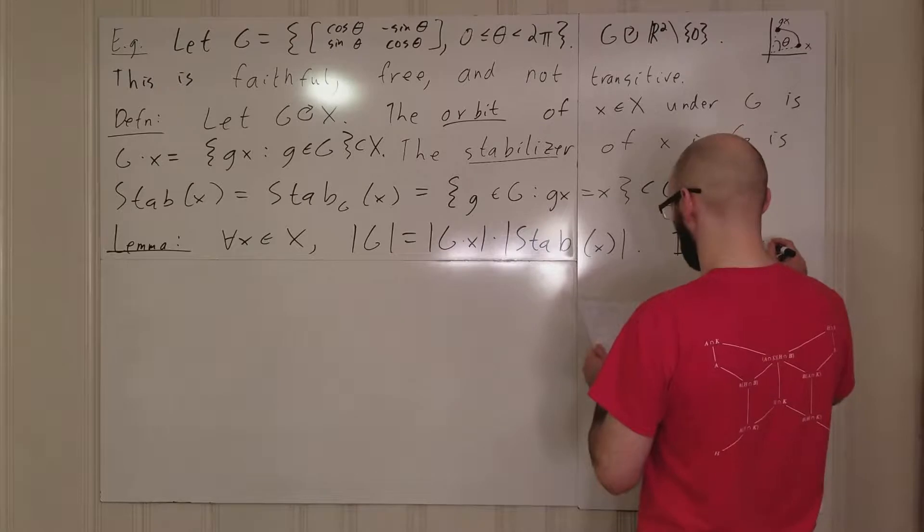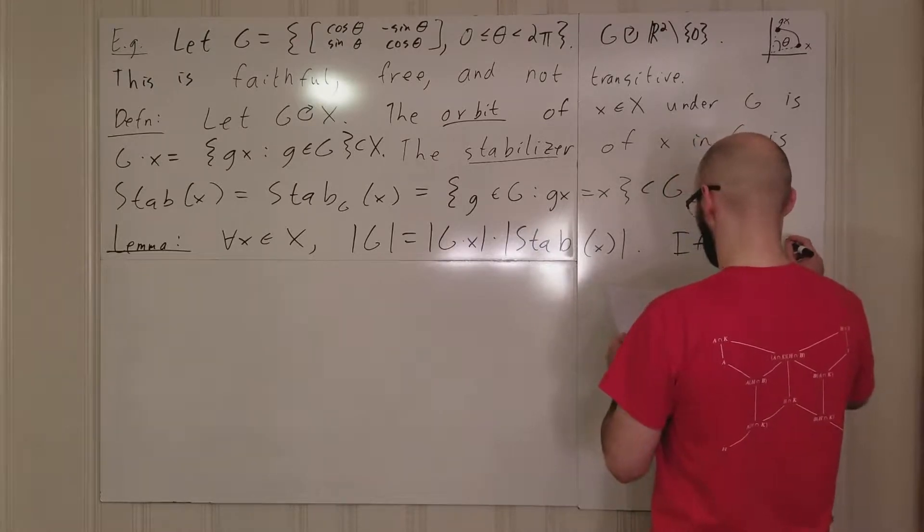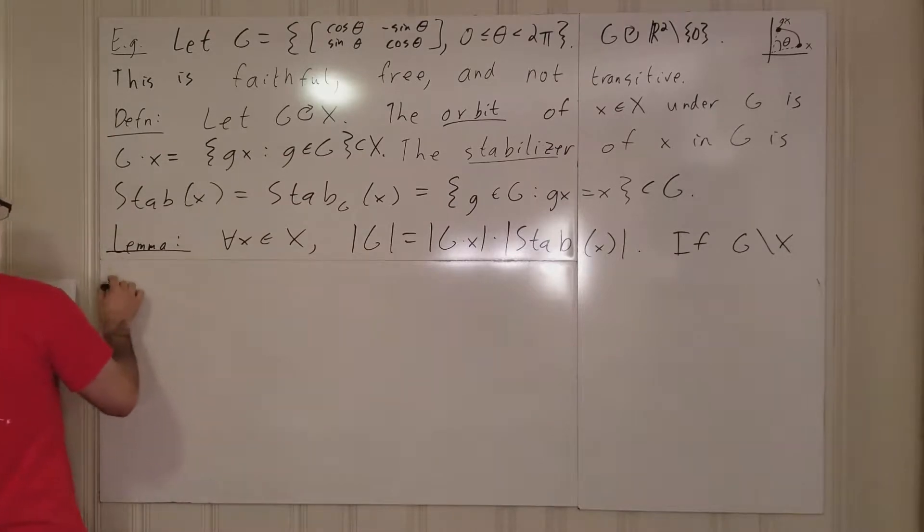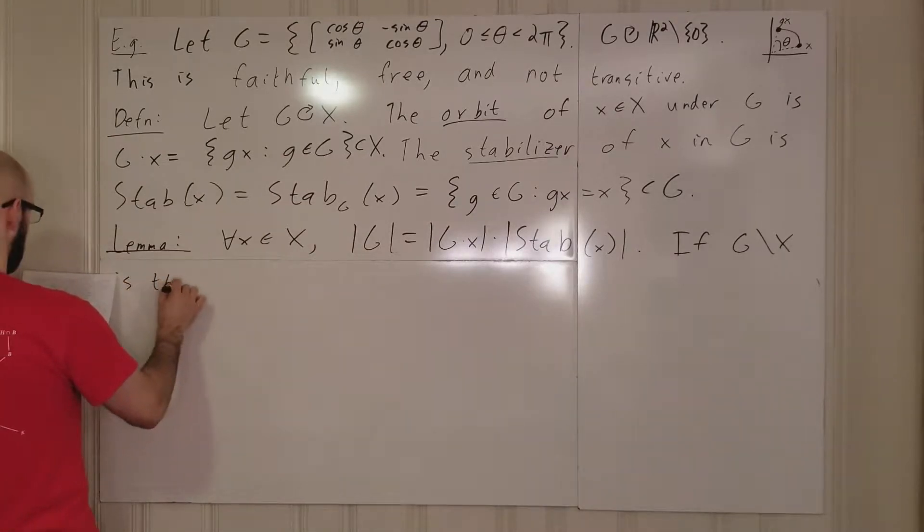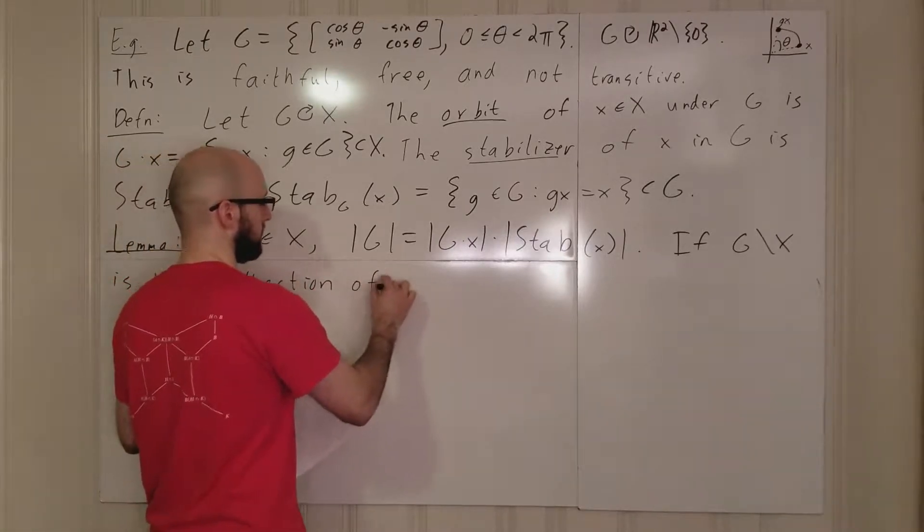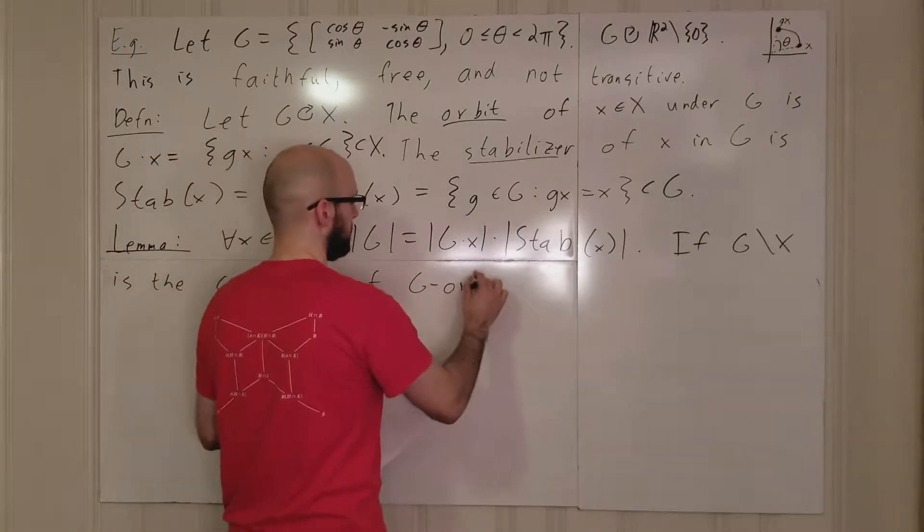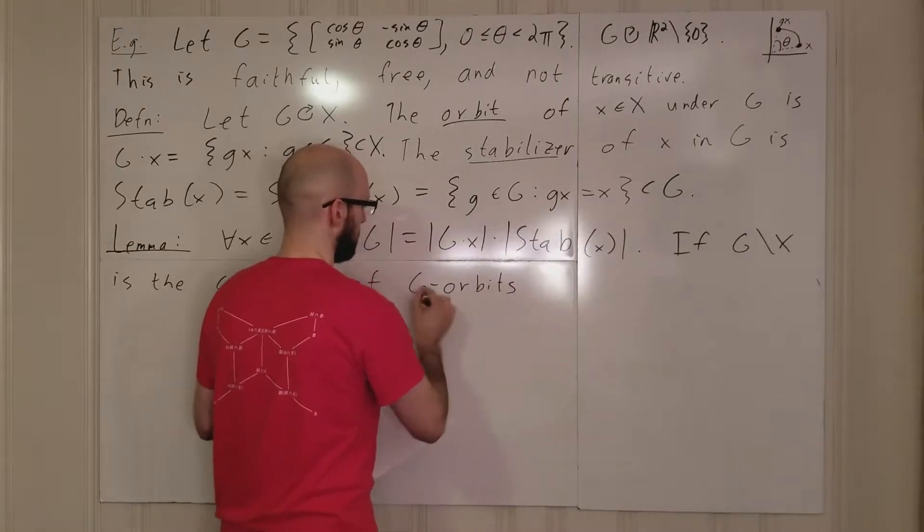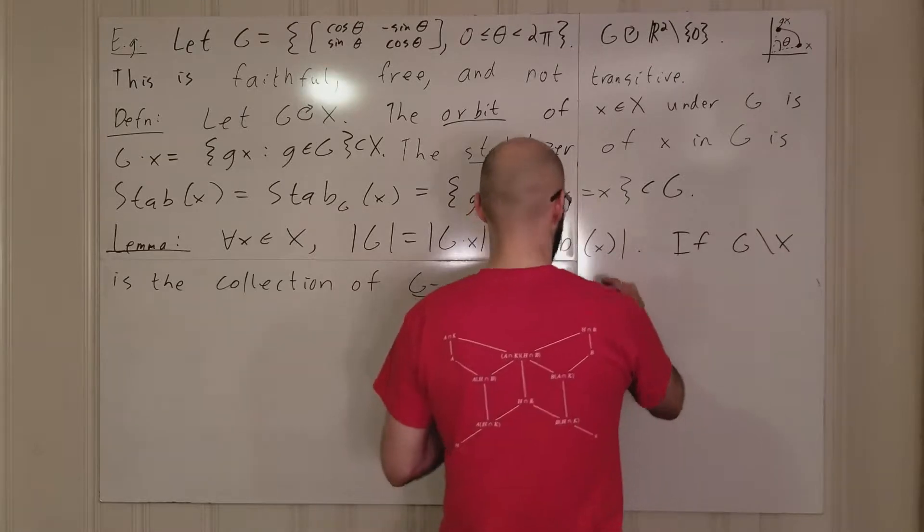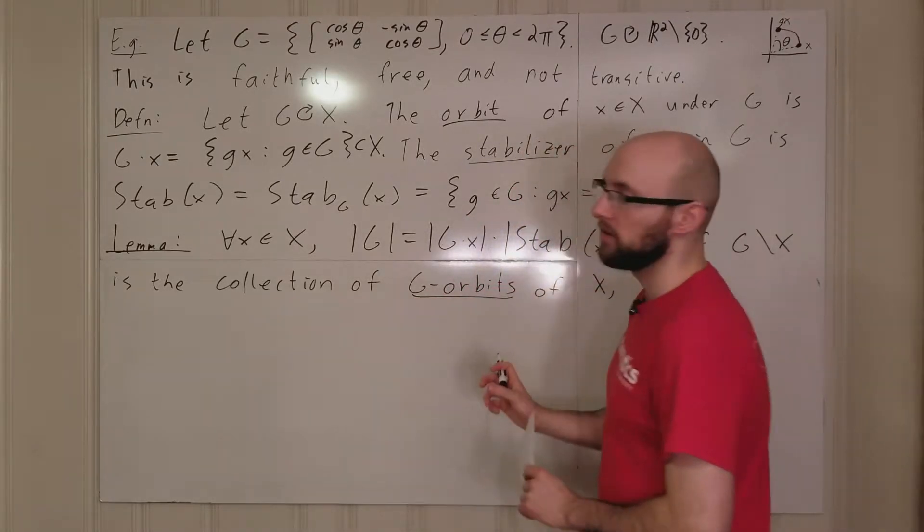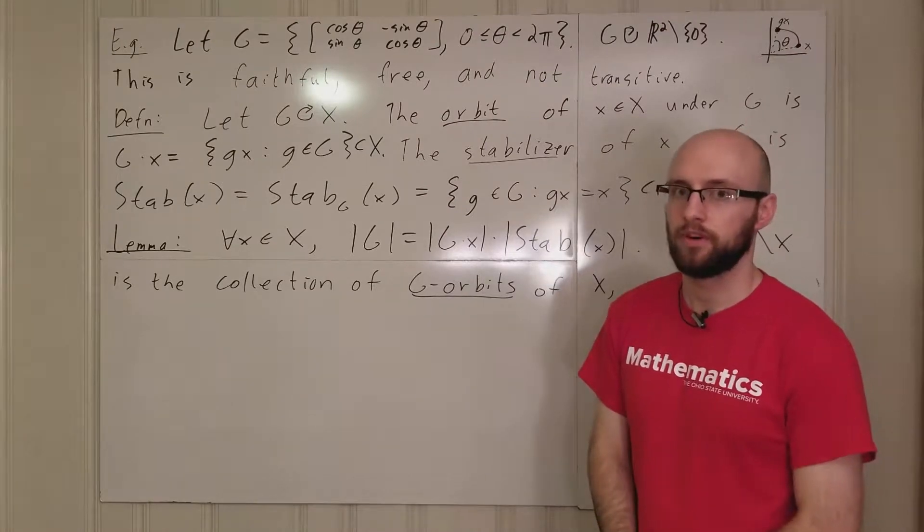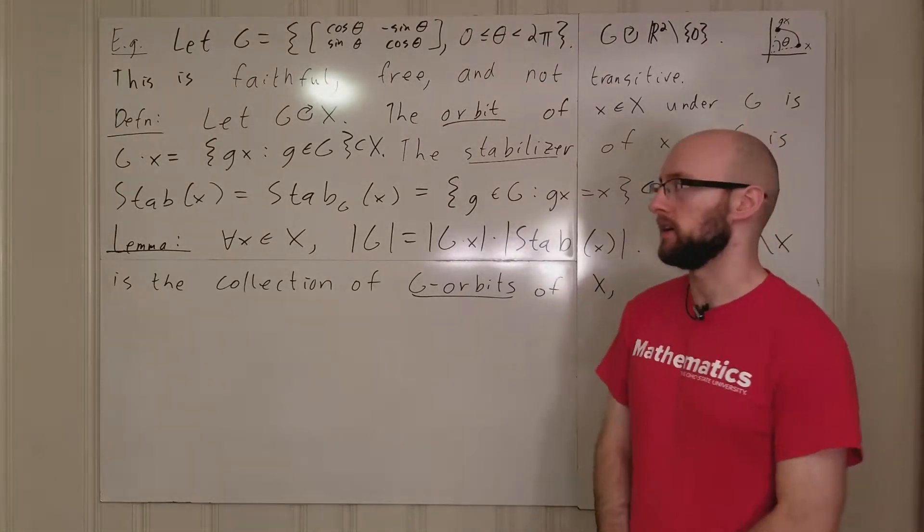And also, if g mod x is the collection of, we'll call this g orbits of x, meaning the collection of orbits in x that you get from considering g as a group action on x.